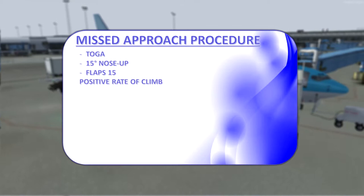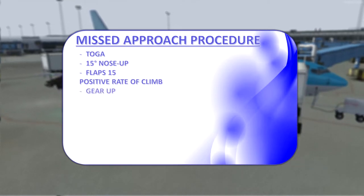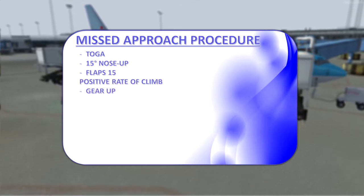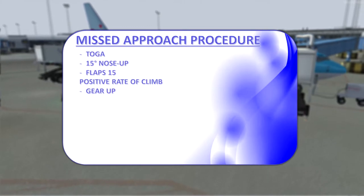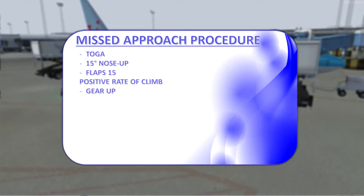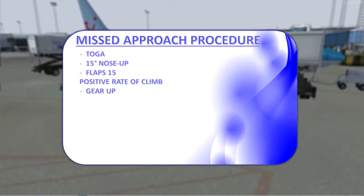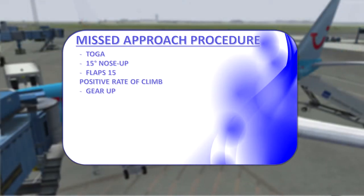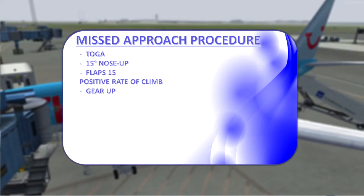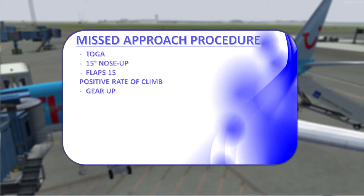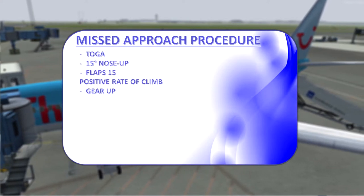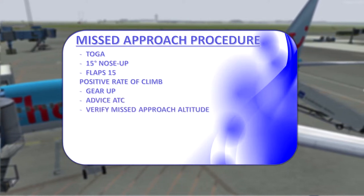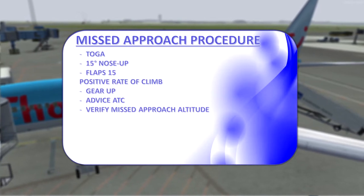Once a positive rate of climb is achieved, we will raise the gear. The reason the gear stays down until then is to avoid hitting the ground with the fuselage in the event that we go around just above the tarmac — in that event we want the gear to absorb the impact, not the fuselage. After the gear lever has been set to the up position, we will advise ATC and verify that the correct missed approach altitude is set in the MCP.